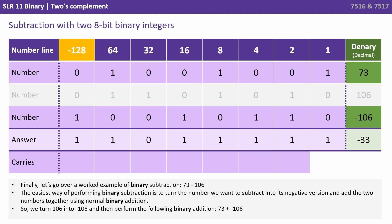We now have the number minus 33. That's a negative 128 plus 64 plus 16 plus 8 plus 4 plus 2 plus 1, negative 33. Or in other words, the original equation 73 minus 106.